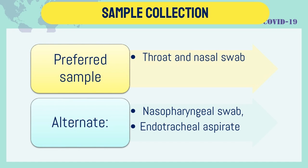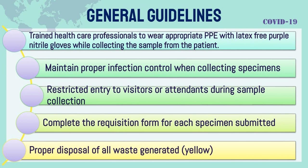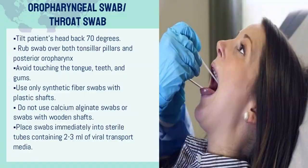Preferred samples include throat and nasal swab, or nasopharyngeal swab. Alternate samples include endotracheal aspirate. Respiratory specimen collection methods include lower respiratory tract options such as bronchoalveolar lavage, tracheal aspirate, and sputum collected 2–3 ml into a sterile, leak-proof, screw-cap sputum collection cup. Upper respiratory tract samples use nasopharyngeal swab or oropharyngeal swab. General guidelines require trained healthcare professionals to wear appropriate PPE with latex-free purple nitrile gloves while collecting samples, and maintaining proper infection control.